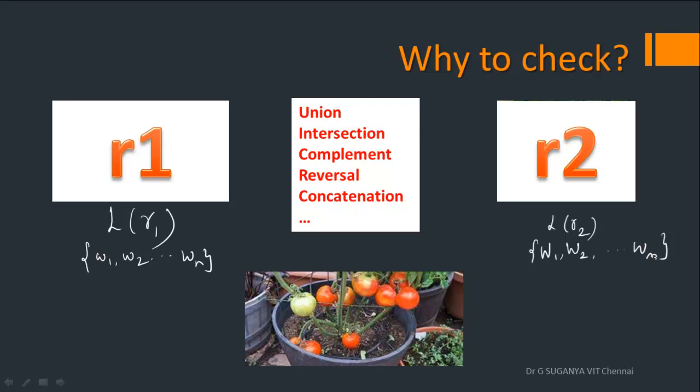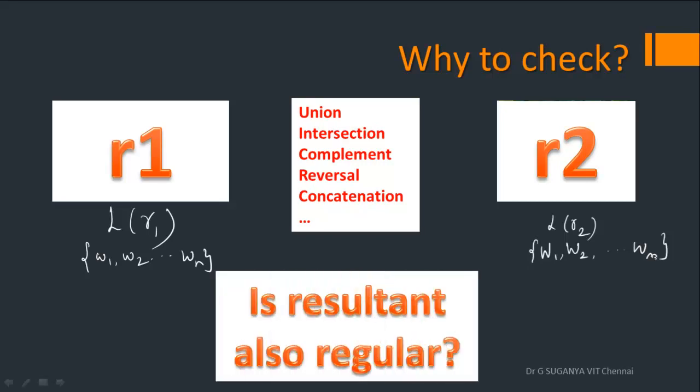What are we trying to expect out of it? When we are hybridizing a tomato with another tomato, we expect a tomato to be the result, not a pumpkin. We want something eatable at least as an output. So given two regular languages R1 and R2, I may be interested in knowing whether, by the application of any of these operations, the resultant is also regular.